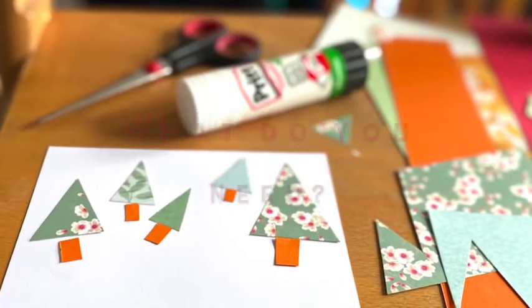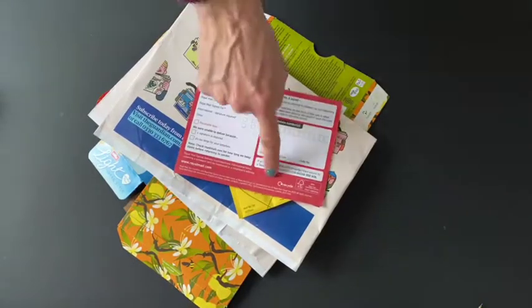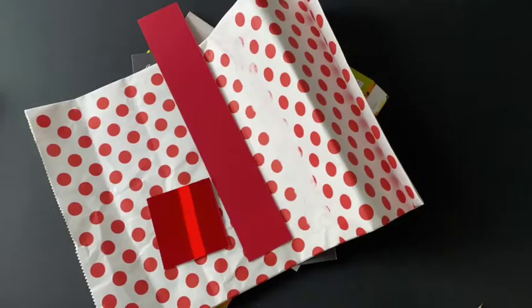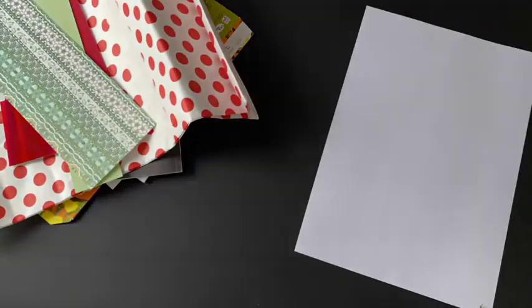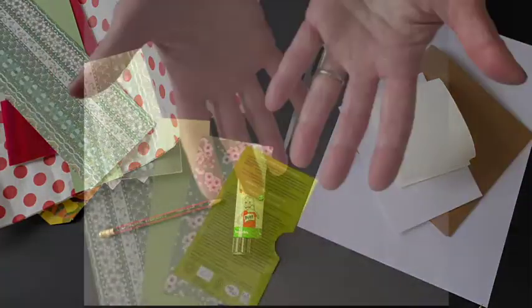So what do you need? Raid your recycling for different colour cards and paper, old magazines, wrapping paper, different colour card. You need some plain card and paper to stick onto, a pair of scissors, glue stick and a pencil.